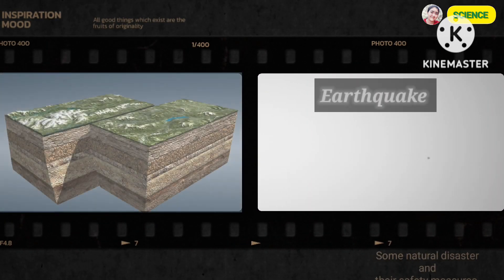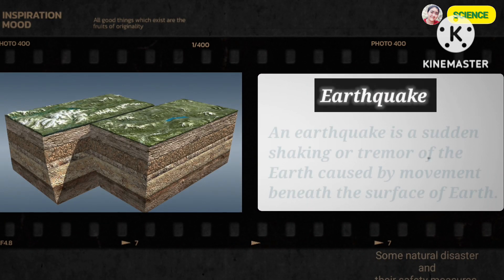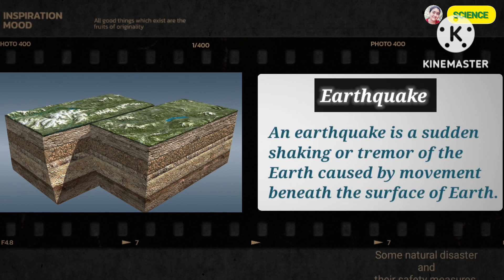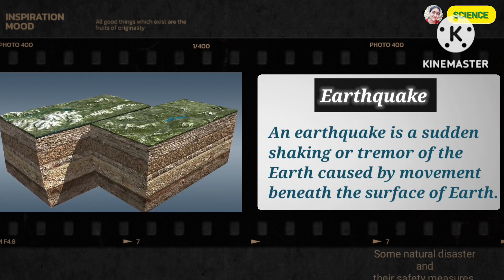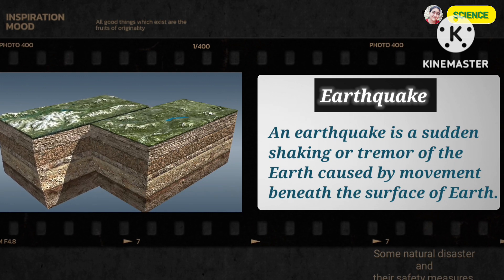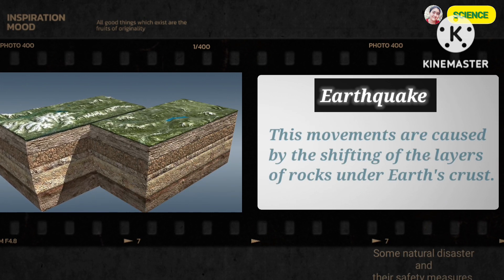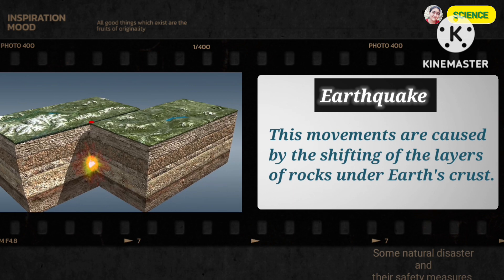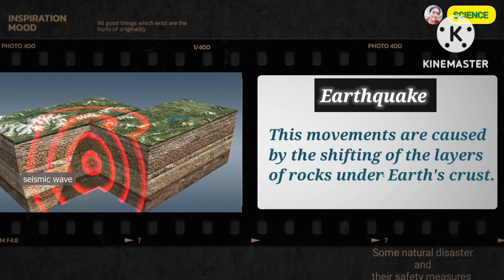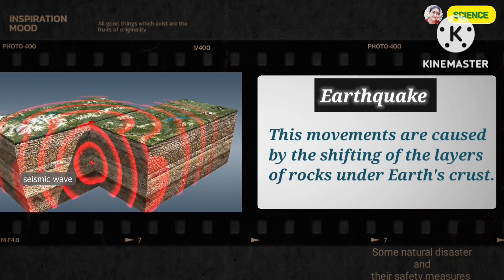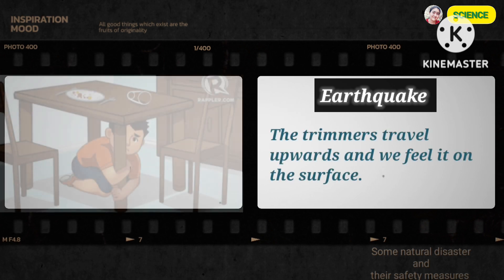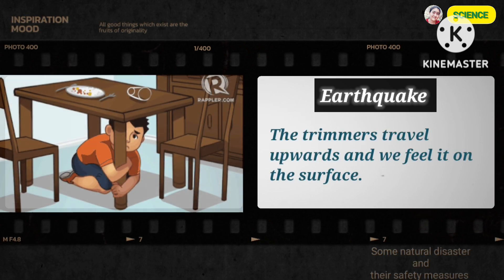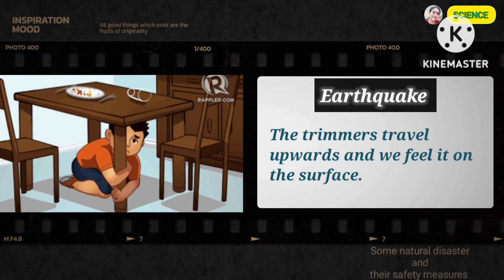Earthquake. An earthquake is a sudden shaking or tremor of the earth caused by movement beneath the surface of earth. These movements are caused by the shifting of the layers of rocks under earth's crust. The tremors travel upwards and we feel it on the surface.